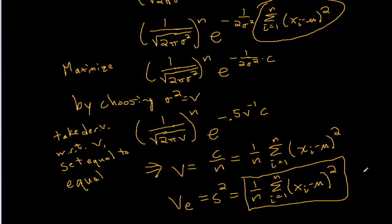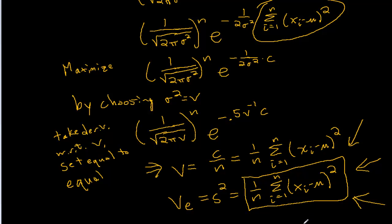To get the maximum likelihood estimator for the standard deviation, we would just take the square root. However, what we're going to find is that in a sense this is still not the best estimate — it ends up being biased. We will see that later, first via an example and then analytically. You'll have to wait until the next video for that, so I will see you there.